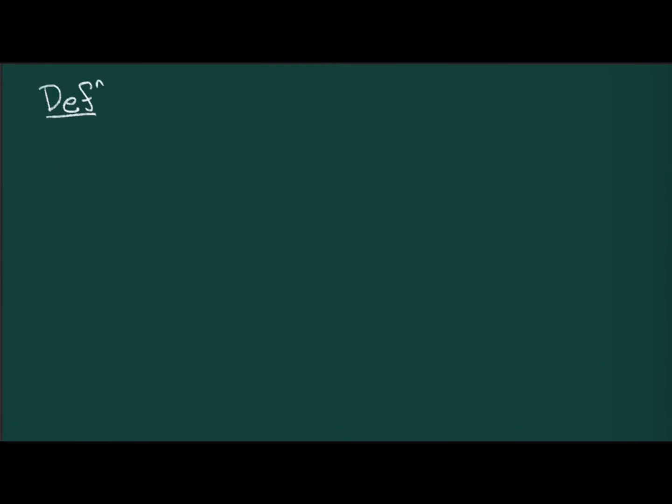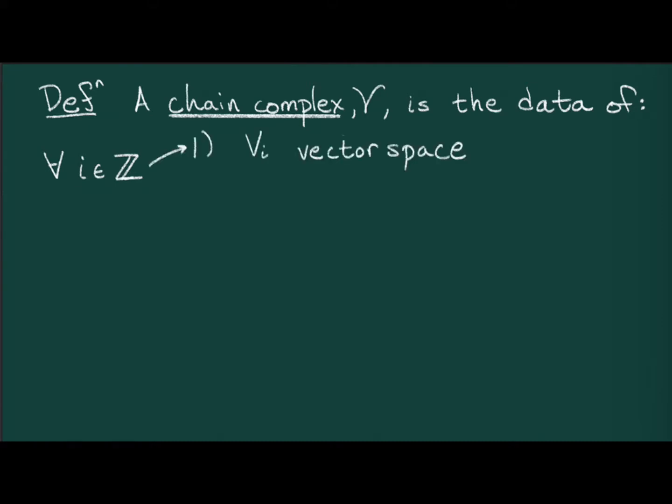A chain complex V is the data of, for every integer i, a vector space v_i, and a linear map ∂_i from v_i to v_{i-1}, called the boundary operator.